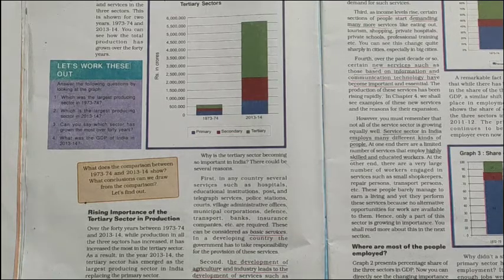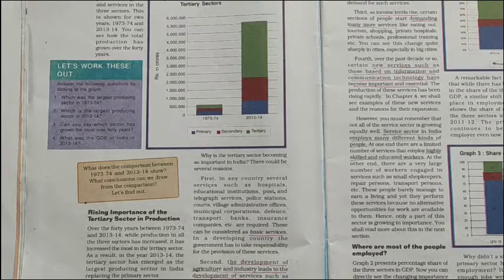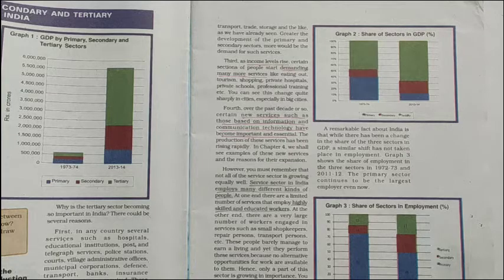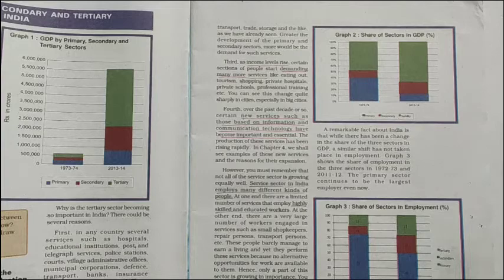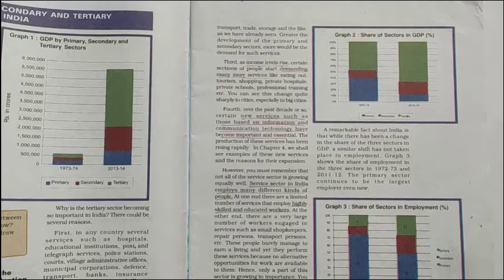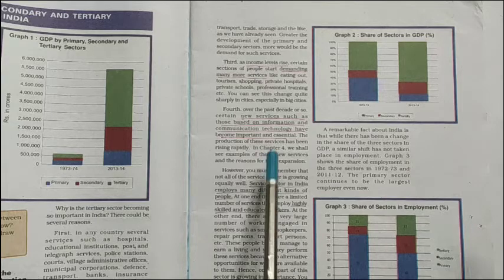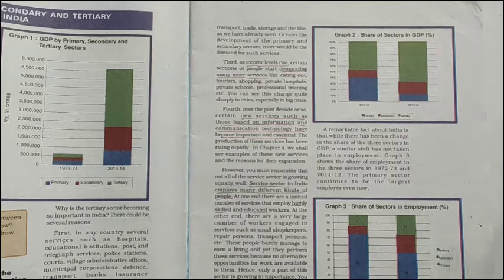The second reason is the development of agriculture and industry, which leads to development of services like transport, trade, and storage. Thirdly, as services and production increase, income levels also rise. People who have money start demanding more services like eating out, tourism, shopping, private hospitals, private schools, and professional training — mostly seen in big cities. The fourth reason is the growing importance of information and communication technology, whose production has been rising rapidly.